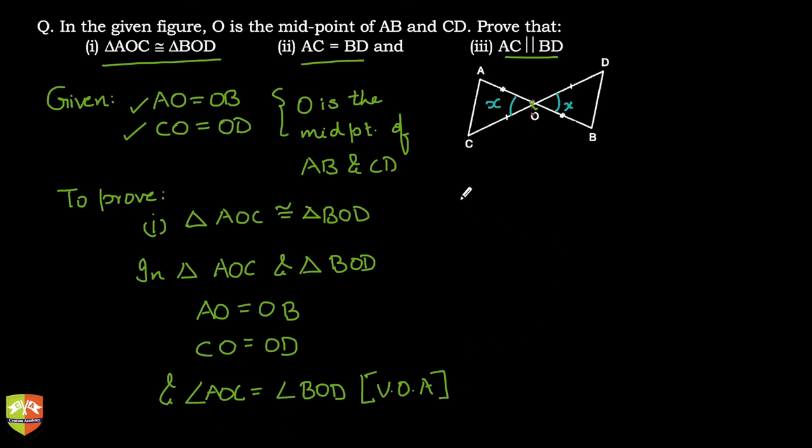The moment this is done, so what can we conclude? We can conclude that triangle AOC is congruent to triangle BOD by SAS congruence criteria. So this is proven, no problem in proving the two triangles to be congruent.